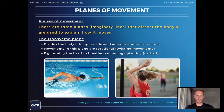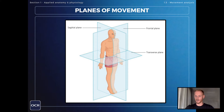Next we have the transverse plane, which divides the body into upper and lower, otherwise known as superior and inferior sections. Movements in this plane are rotational, for example turning the head to breathe when performing the front crawl or pivoting in netball. The transverse plane clearly divides the body into upper and lower sections.